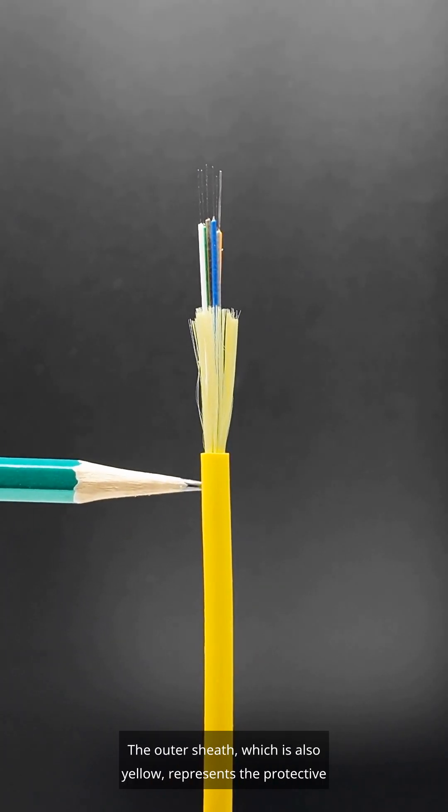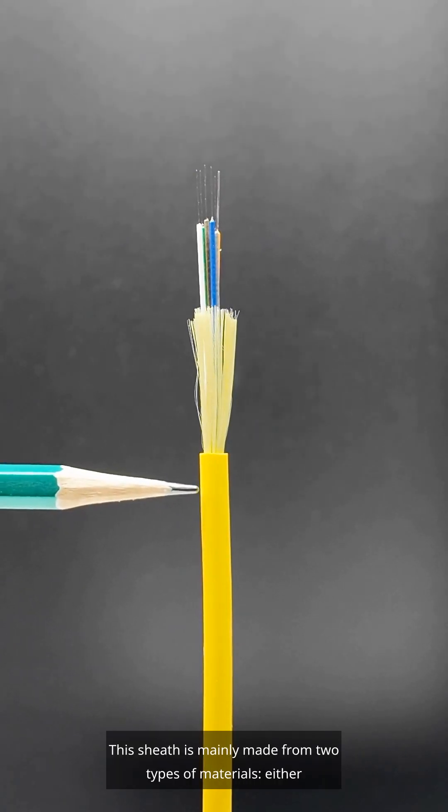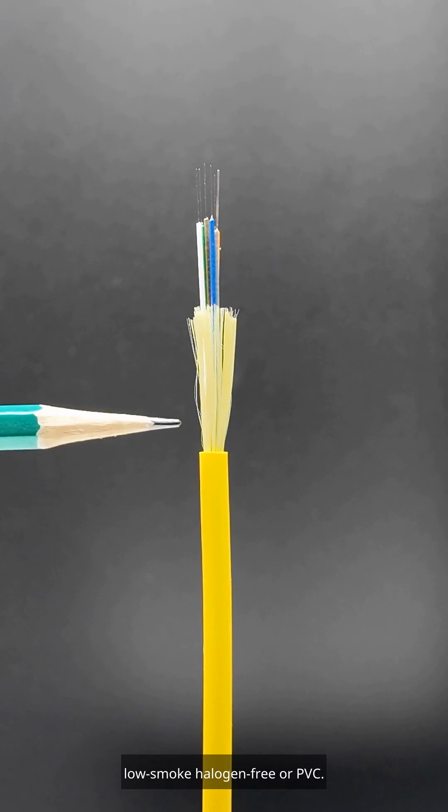The outer sheath, which is also yellow, represents the protective layer. This sheath is mainly made from two types of materials, either low smoke, halogen-free, or PVC.